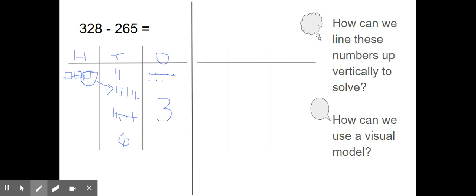Pause the video and try solving it using a vertical equation to see if you get the same answer. Then we'll do it together. Hundreds, tens, and ones. Let's put the numbers in the right spot. 3 hundreds, 2 tens, 8 ones. Minus 200, 6 tens, 5 ones. Sorry, some of my numbers are not showing up clearly. Then we also need to put a minus sign and the equal sign to finish our vertical equation. We will start with ones just like we always do.